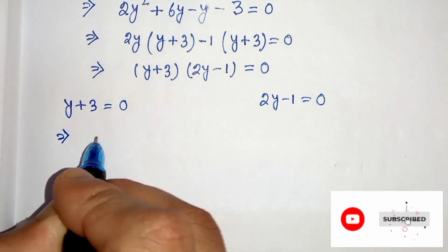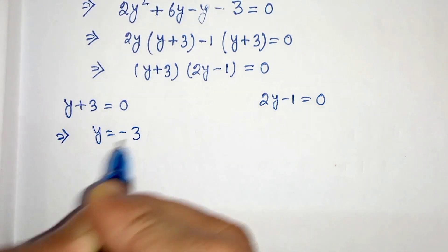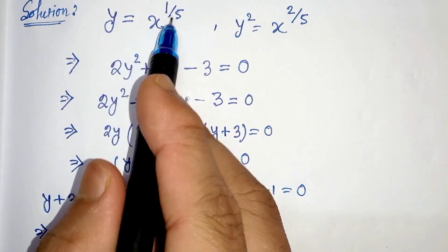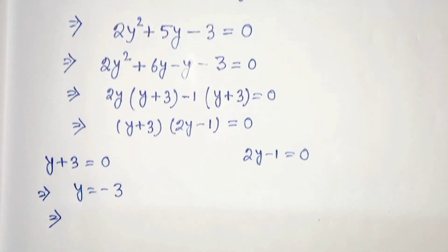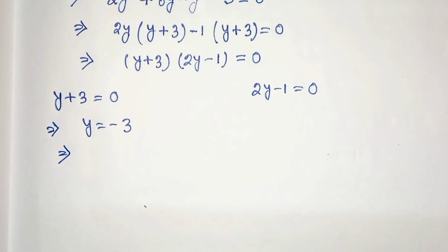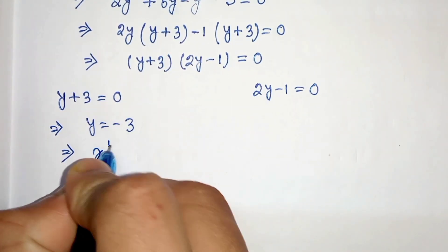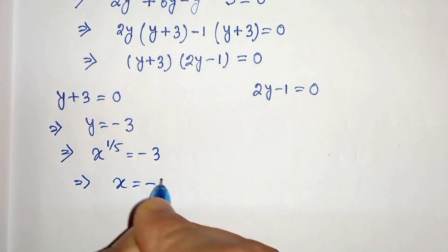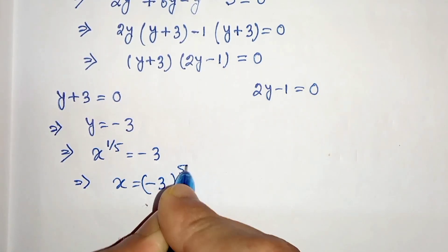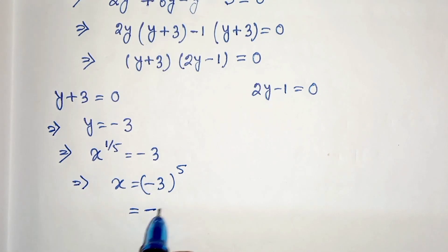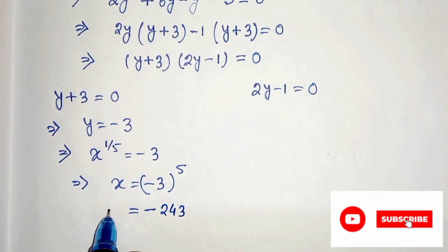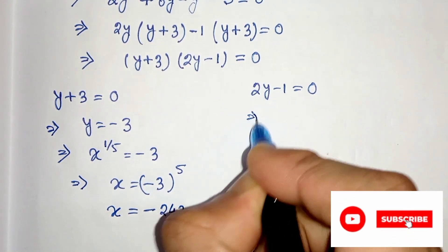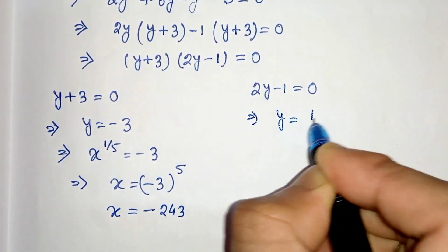From here we get y equals to minus 3. But we have considered y as x to the power 1 by 5, so let's replace this: x to the power 1 by 5 equals to minus 3. From here we can write x equals to minus 3 whole to the power 5, and minus 3 to the power 5 is minus 243. So x is minus 243.